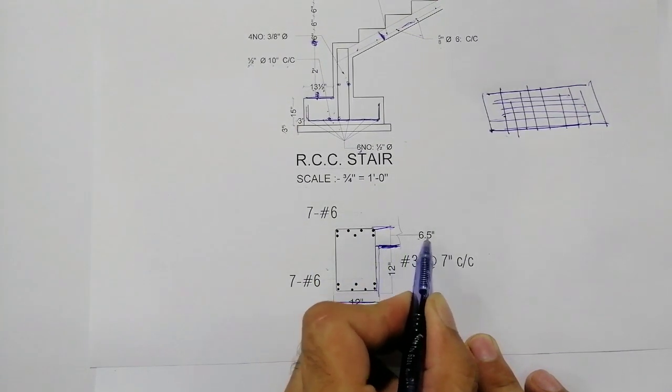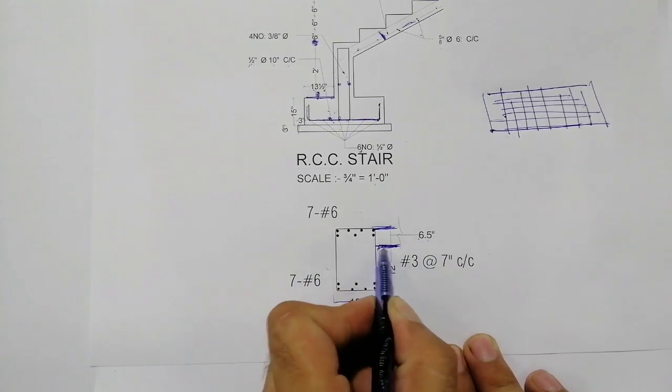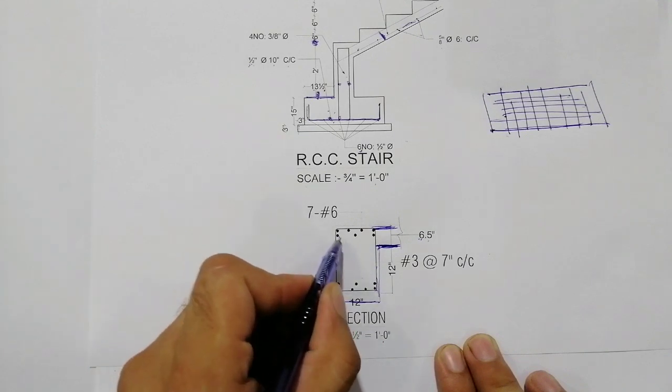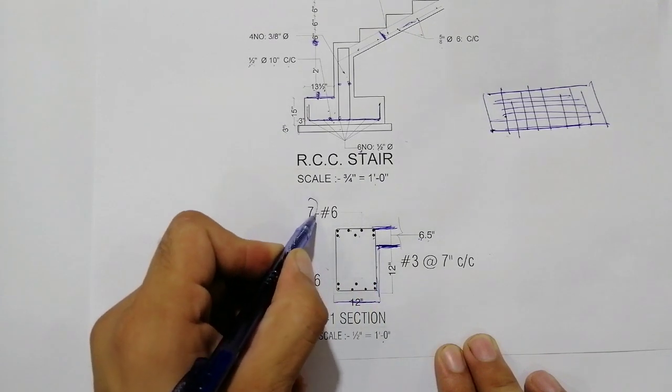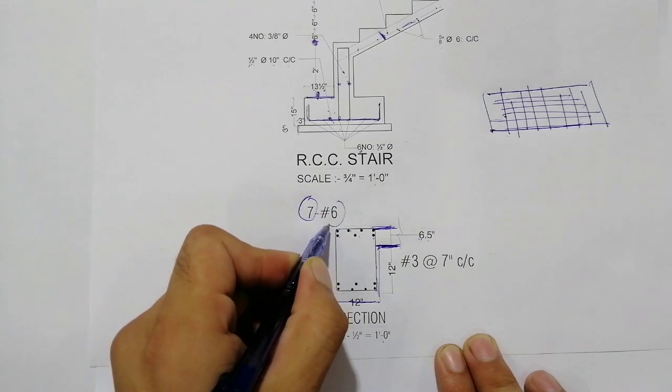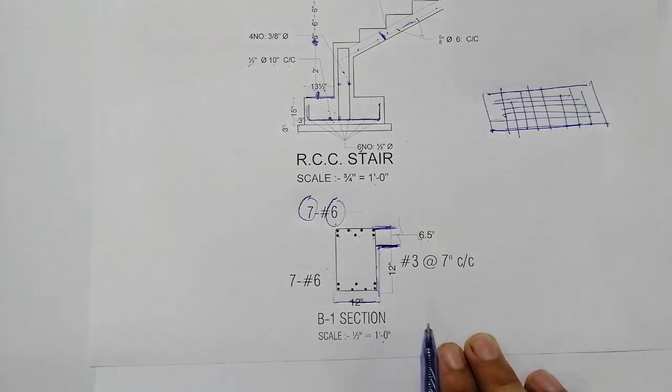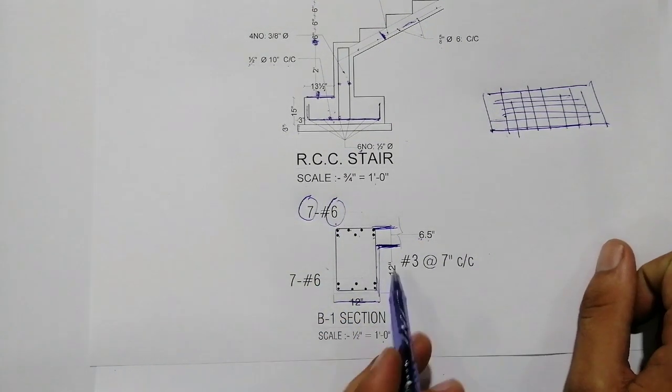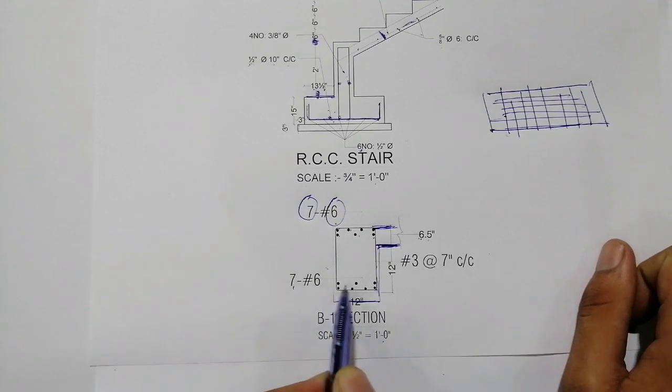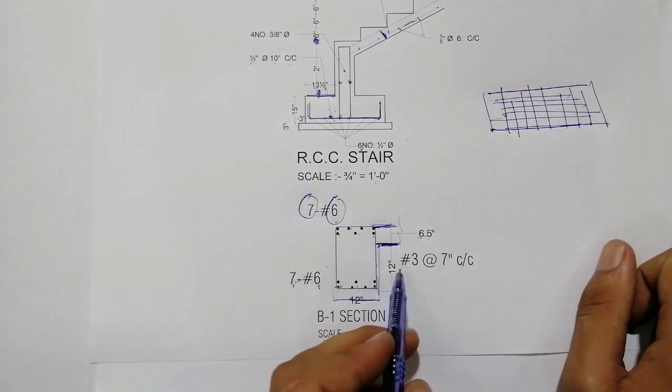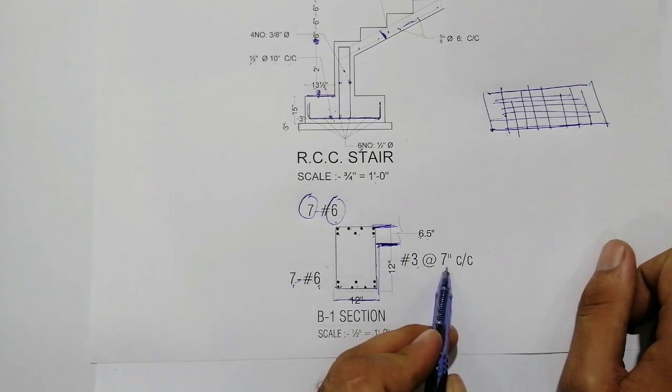This is 6.5 inches thick slab roof. The total numbers of steel bars used are seven numbers - one, two, three, four, five, six, seven - and the diameter is 6-sutra. There are also seven numbers here with a diameter of 6-sutra, but here three numbers with the spacing of seven inches.